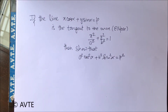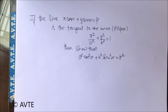The line x cos alpha plus y sine alpha equals p is the tangent to the ellipse. Then show that a square cos square alpha plus b square sine square alpha is equal to p square.